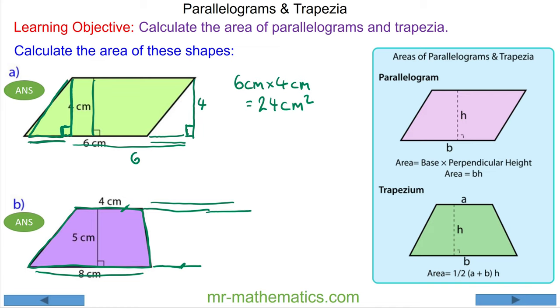So this side becomes this side, this side becomes this side, and this length is this length. What we have now is a perfect parallelogram. These two sides are parallel and equal, these two sides are also parallel and equal, and we know a parallelogram is simply the base times the height.